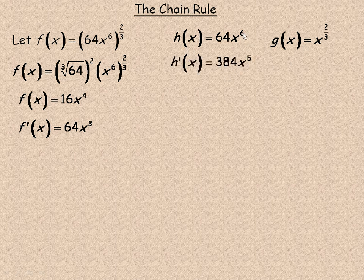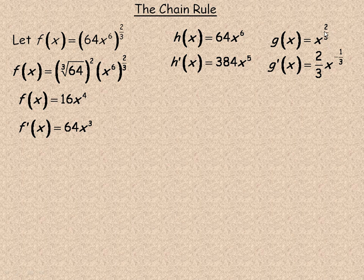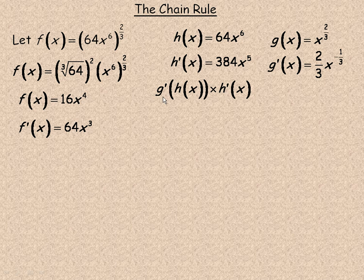Using the power rule, h'(x) = 384x⁵ (since 6 × 64 = 384, and we decrease the exponent by 1). For g'(x), we bring the 2/3 down in front: g'(x) = (2/3)x^(−1/3). The chain rule looks like this: f'(x) = g'(h(x)) · h'(x). We evaluate the derivative of the outer function not just at x, but at the inside function — substituting the whole 64x⁶ in place of x — and then multiply by h'(x) = 384x⁵.